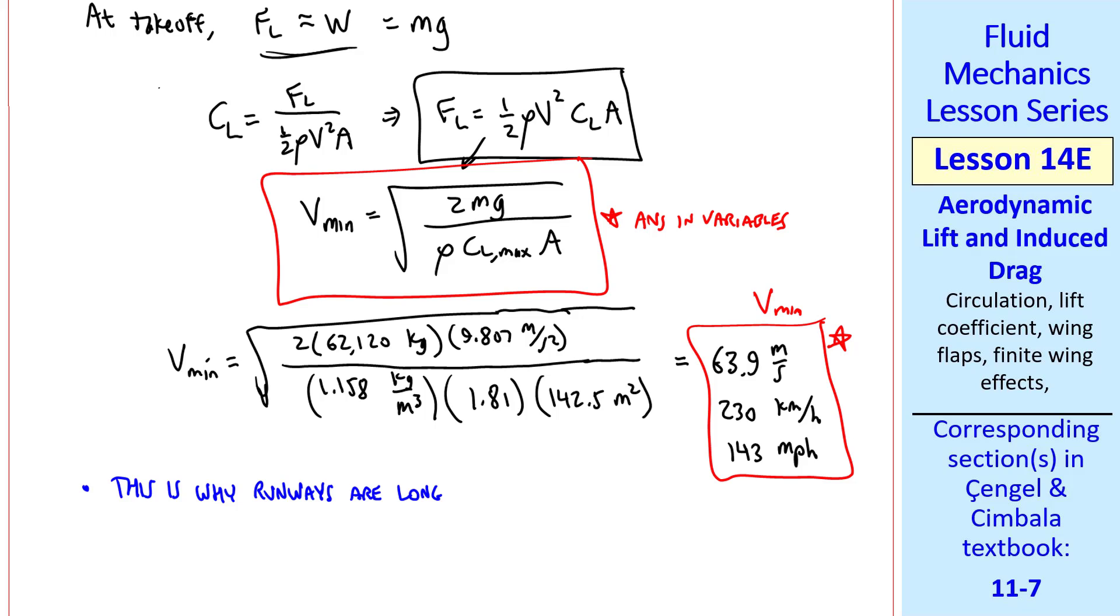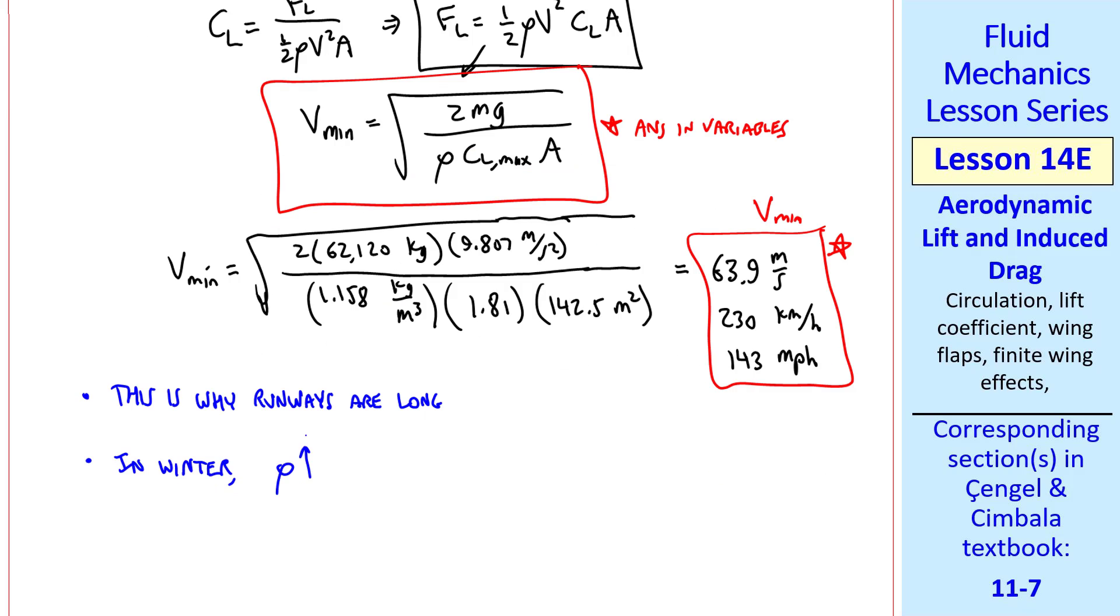In winter, rho increases, so the lift goes up if all else is the same. So it's easier to take off in the wintertime. Of course, there's another problem in the winter. If ice builds up on the airplane wings, it disrupts the flow and can severely affect the lift coefficient. That's why they have to de-ice the plane before taking off in the winter.